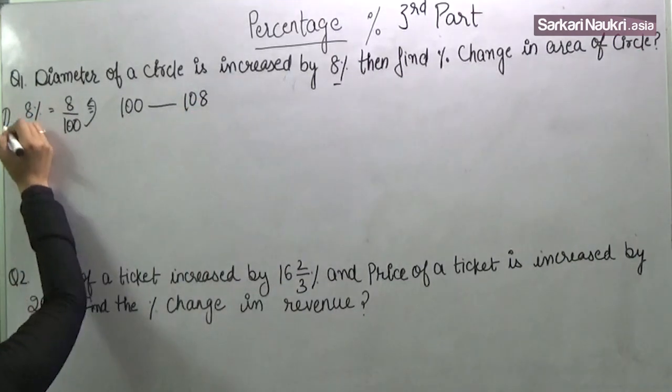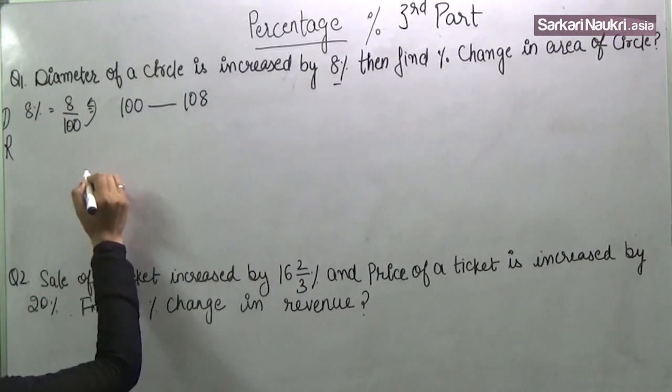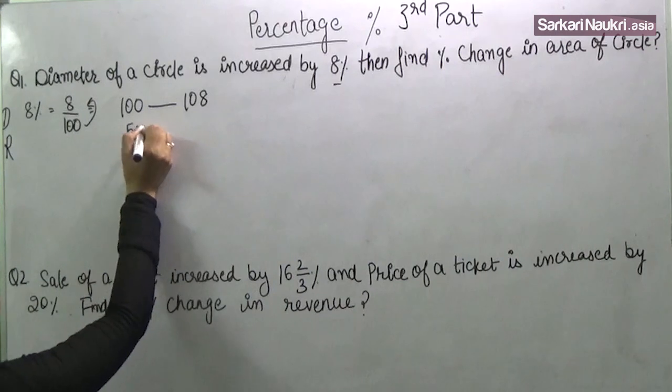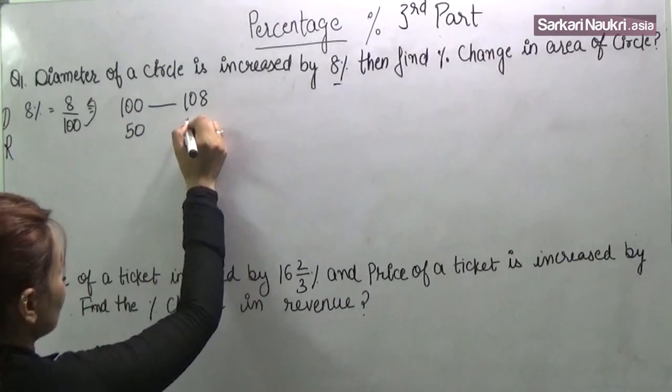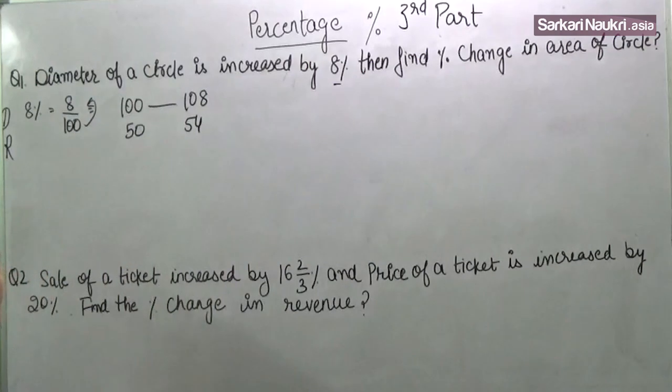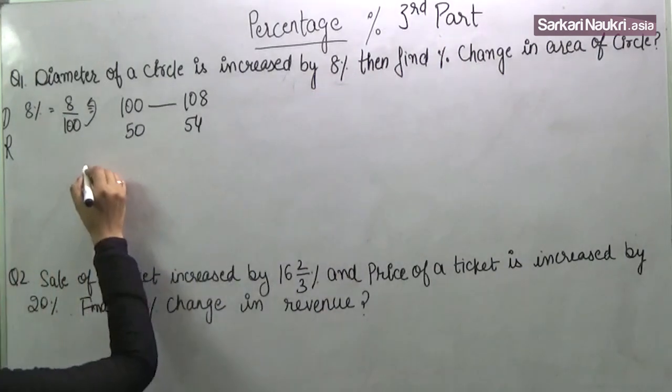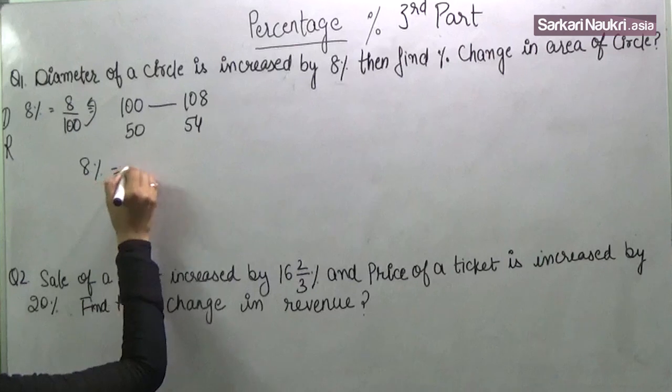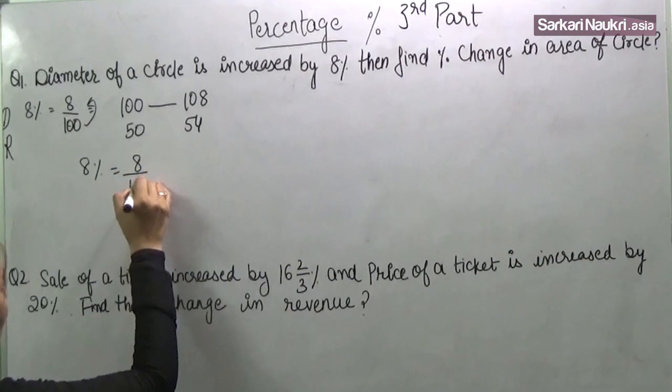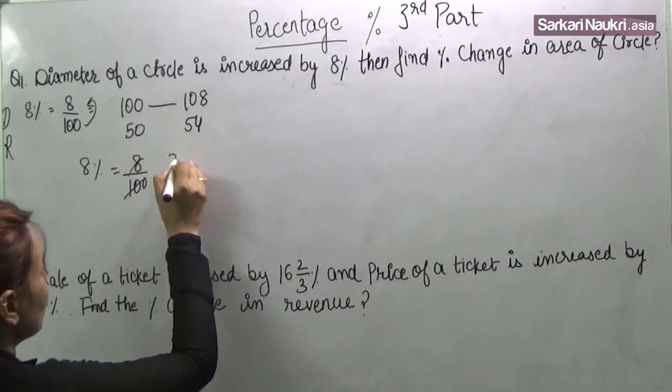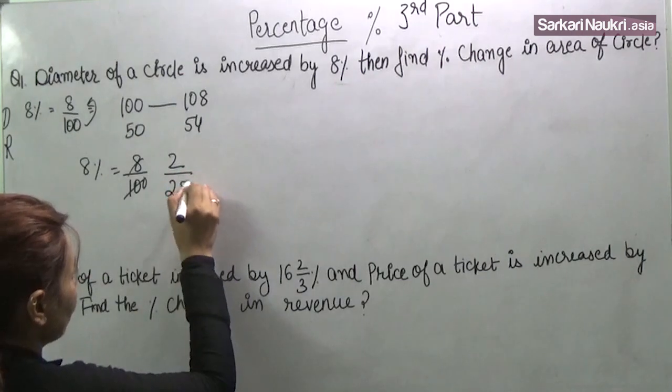This is the diameter. And what about the radius? This will be 50 because radius is exactly half of the diameter and this will be 54. So this is just for the knowledge. So let's come to the point. 8% is increased. How can we write 8%? We can write in this form: 2 by 25.